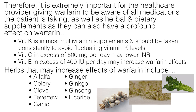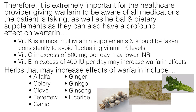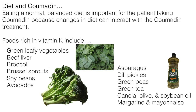Herbs that may increase the effects of warfarin include alfalfa, celery, clove, feverfew, garlic, ginger, ginkgo, ginseng, and licorice. Eating a normal balanced diet is important for the patient taking Coumadin because changes in the diet can affect Coumadin therapy. For example, too much vitamin K can lower the effect of Coumadin since vitamin K is involved in the body's clotting process. There is no need to avoid foods with vitamin K, but it is best to maintain a consistent level of consumption and be aware of foods with vitamin K so overconsumption does not occur.